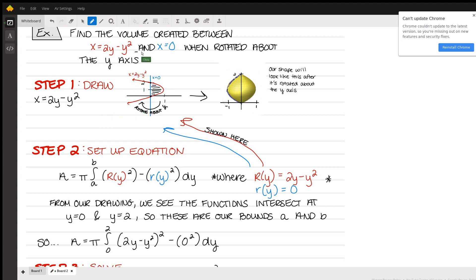And we have to bound it by the other function given to us x equals 0, which is just the y-axis. So once you graph both of those functions, you're going to see that you're left with this area bounded between them right here. And if you rotate that area, it's going to look like this over here, this almost kind of lemon looking shape.